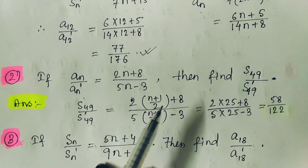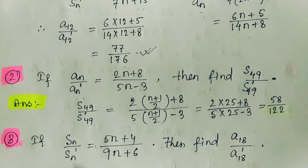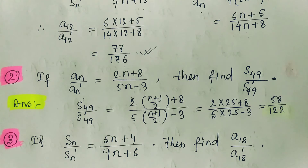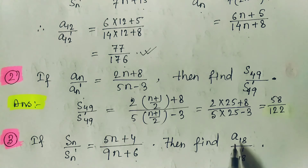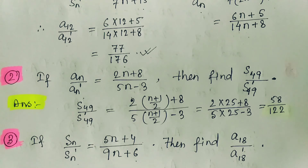One more example for you to solve: given Sn to Sn' equals (5n plus 4) divided by (9n plus 6), find A18 divided by A18'. I hope you can find it very easily because you now understand how to do this.